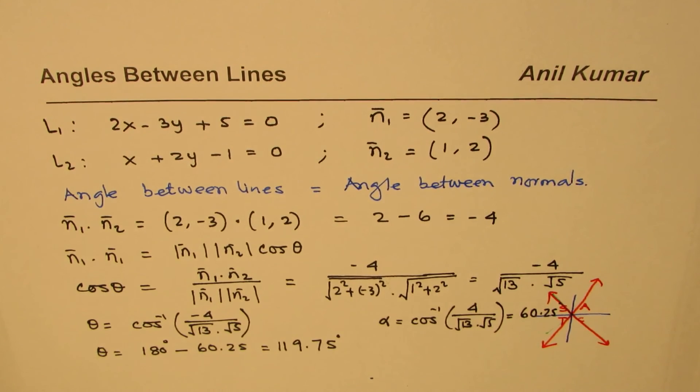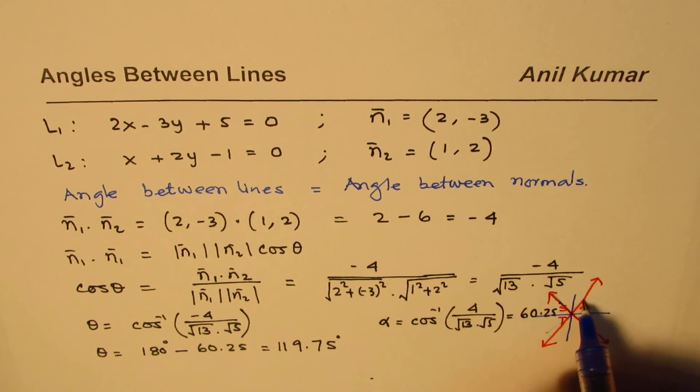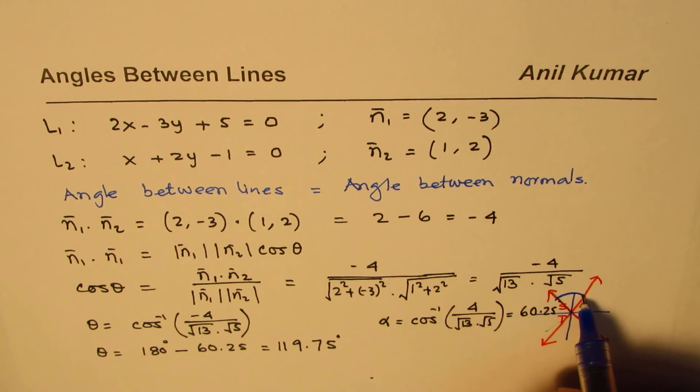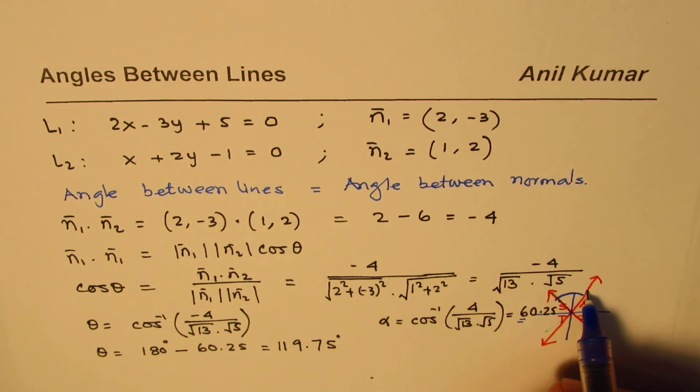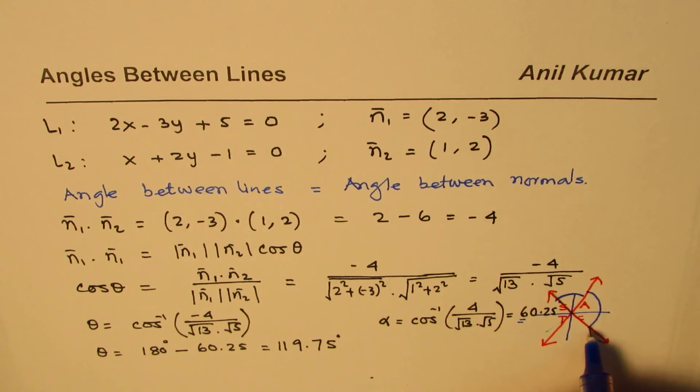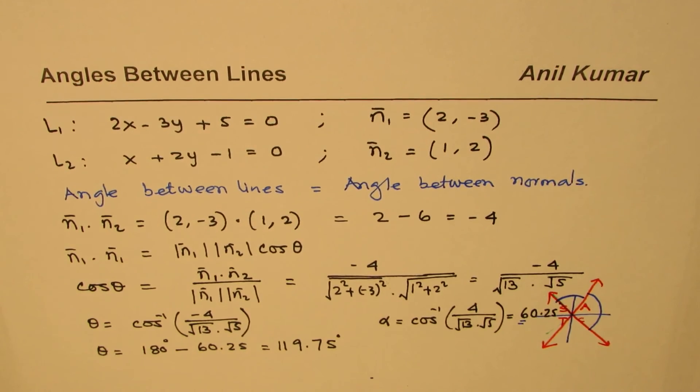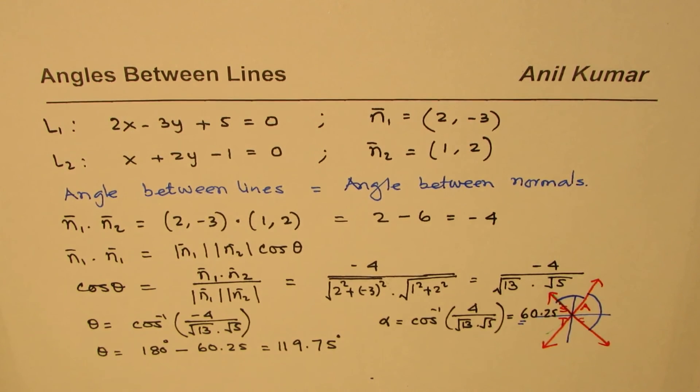So as you see, the angle between the two lines could be the acute angle, which we got at 60, or the other obtuse angle, which we got after taking away 180 degrees. So those both angles are the angles between the two lines. So we could actually give any one of those as our answer. So I hope that helps. So the angle between the two lines will be 60.25 or 119.75.